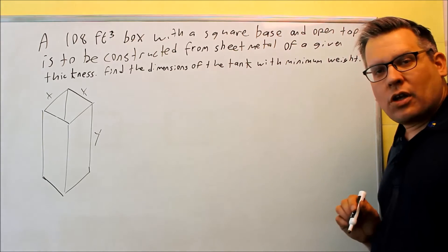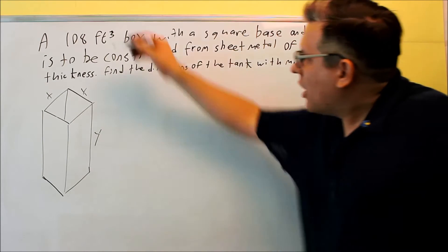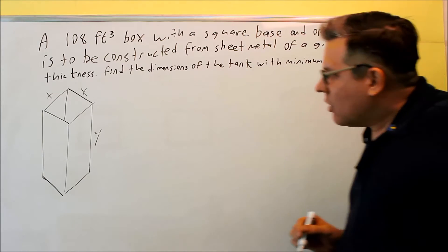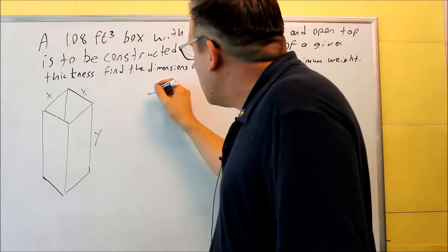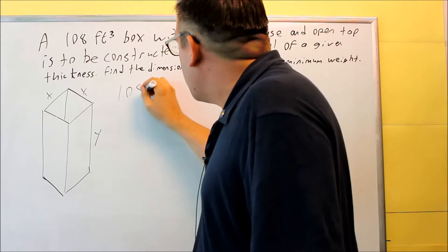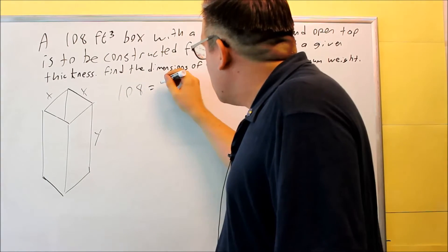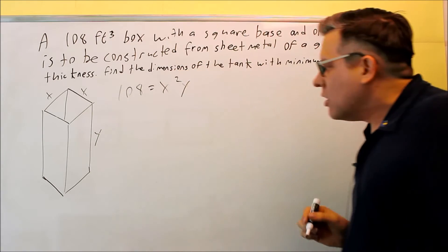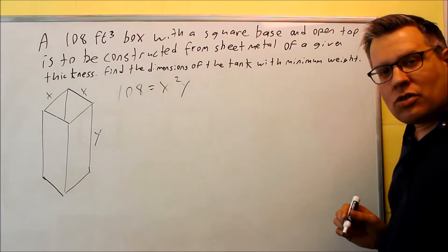Let's come up with an equation for this. First of all, it says that 108 cubic feet, that's going to be the volume. So your volume is going to be 108, and that's equal to all these three multiplied together. So X squared Y, that's going to be the first equation that you're going to use.